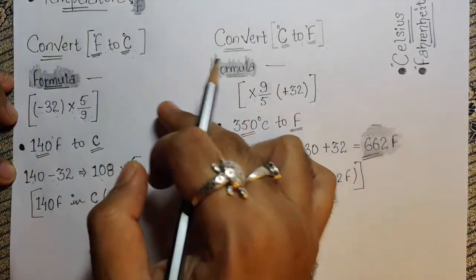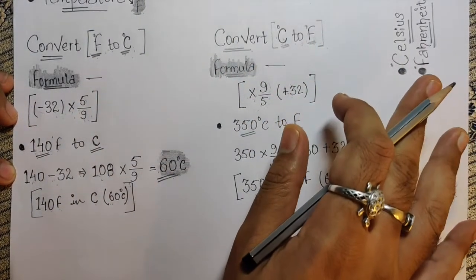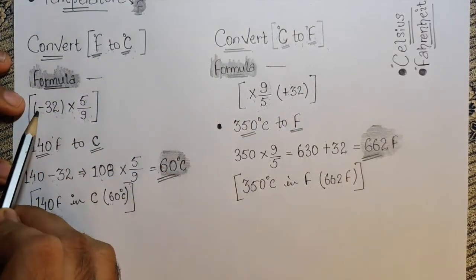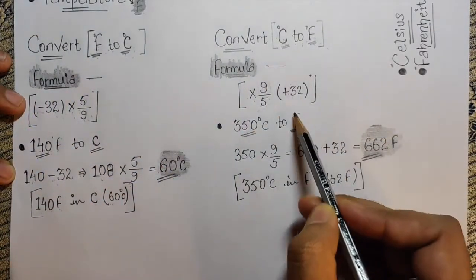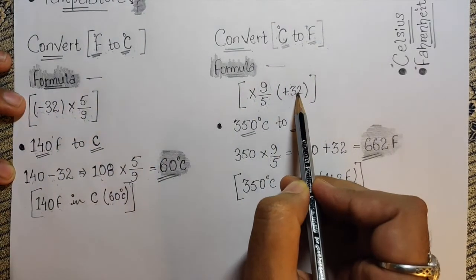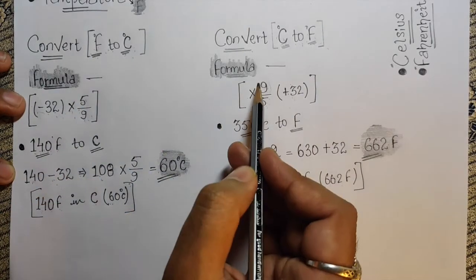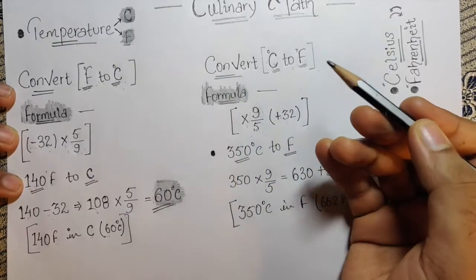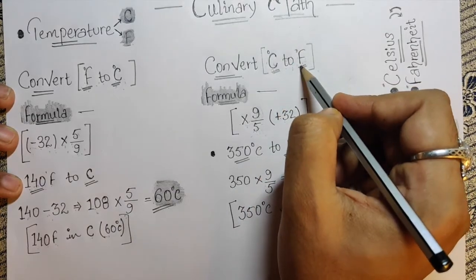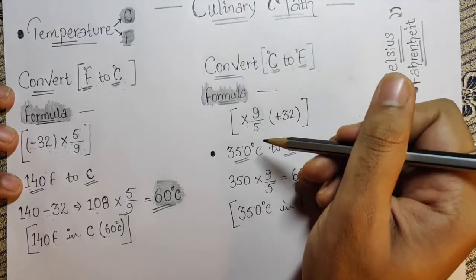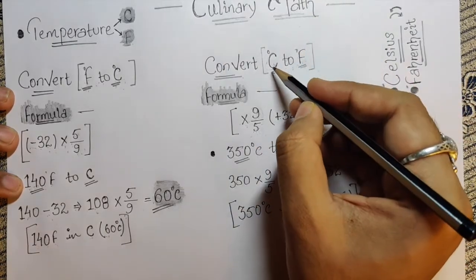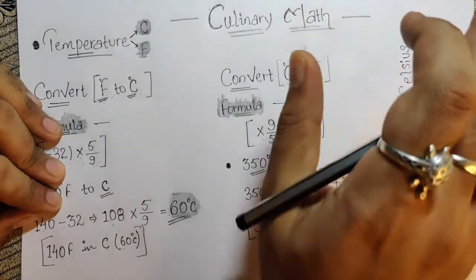So 350 Celsius equals 662 Fahrenheit. This is the easiest formula for converting C to F and F to C. Notice when it comes to Fahrenheit it's minus, and for Celsius it's plus. The difference is 5 divided by 9 versus 9 divided by 5. I remember C to F as India to international, because we use Celsius in India and Fahrenheit internationally.